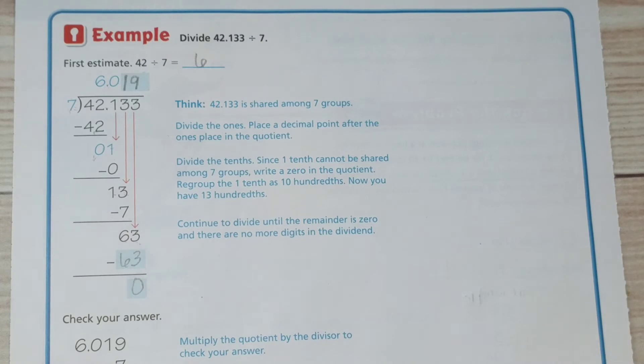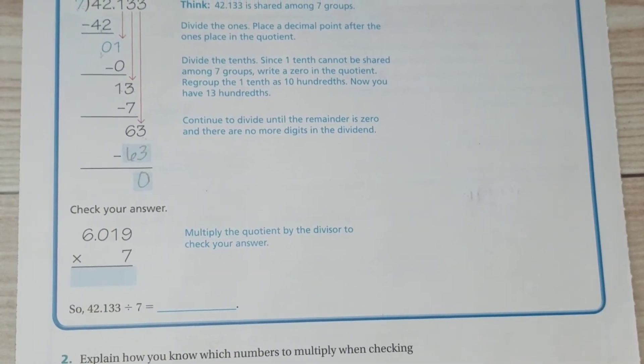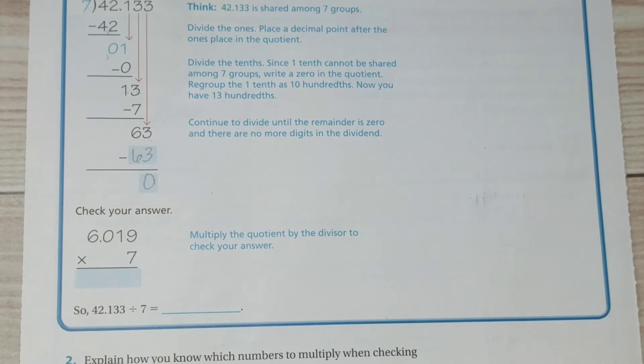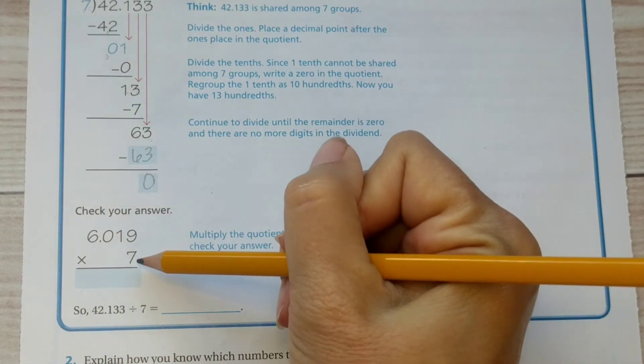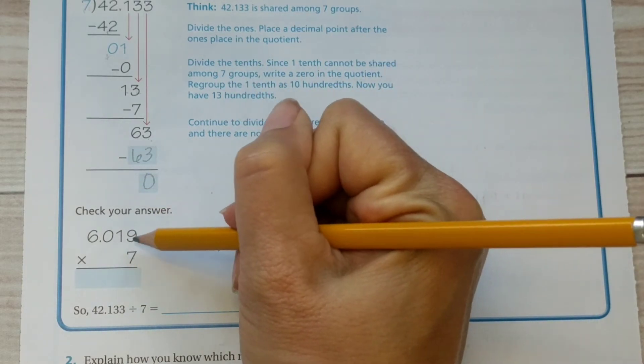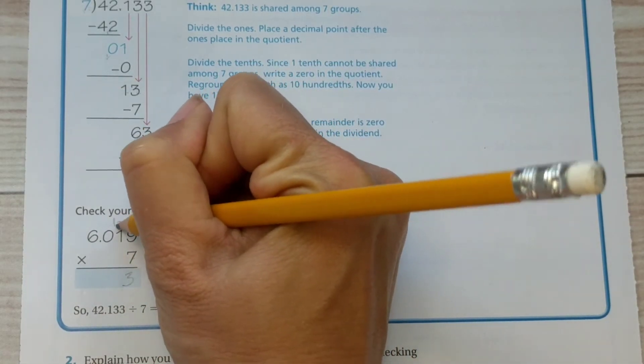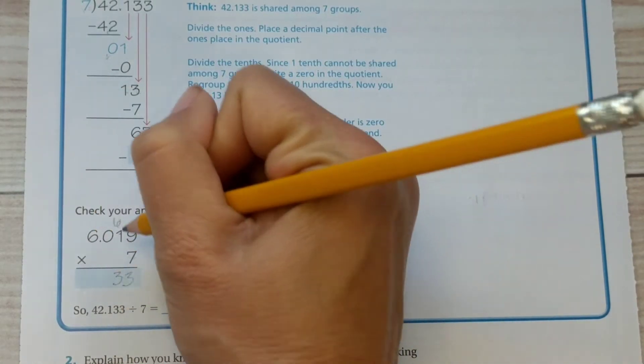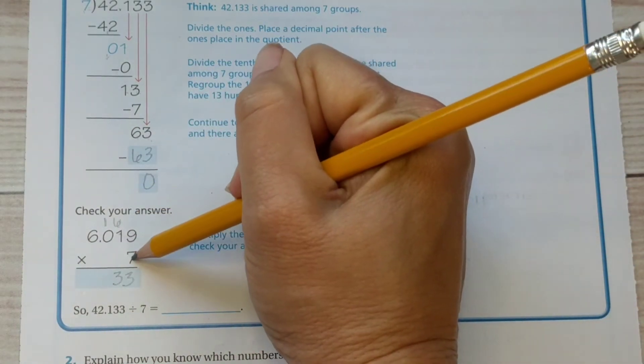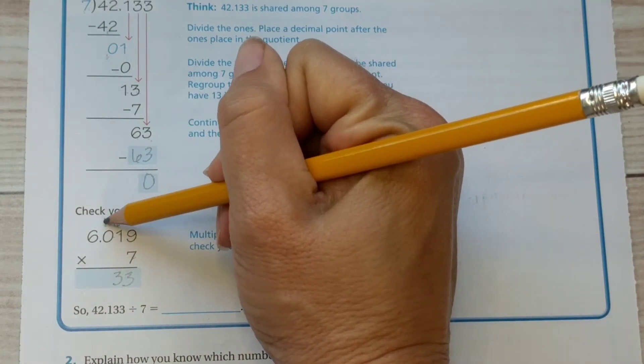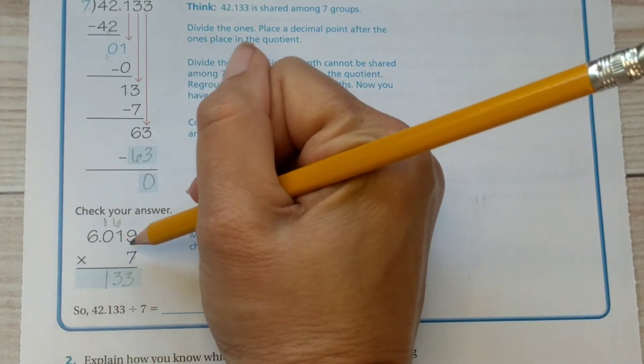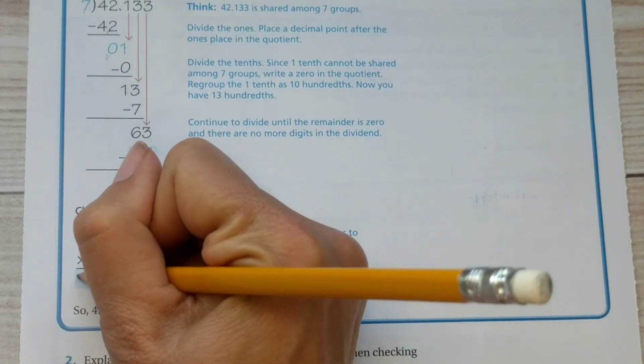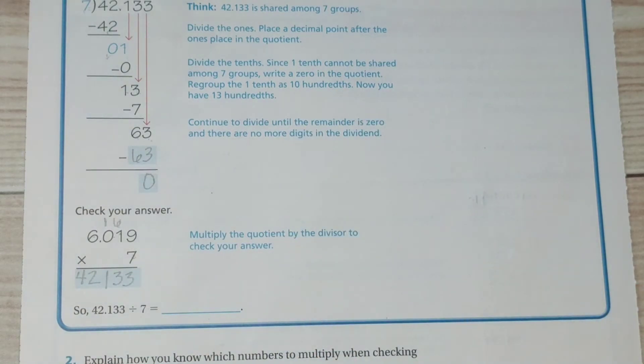Now we'll check our answer by multiplying, which is the inverse operation, meaning it's the opposite operation. Multiplication and division are inverse operations. They undo each other. And this will help us check our answer. Here we go. Seven times nine is sixty three. Seven times one is seven, plus six more is thirteen. Regroup that one. Seven times zero is zero, plus one more is one. Seven times six is forty two.